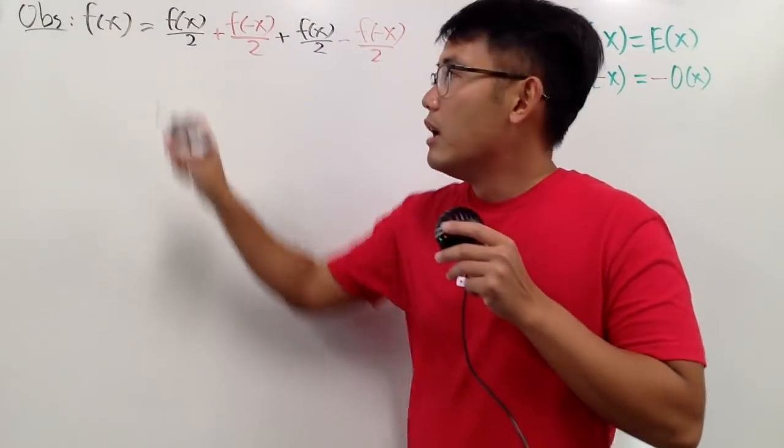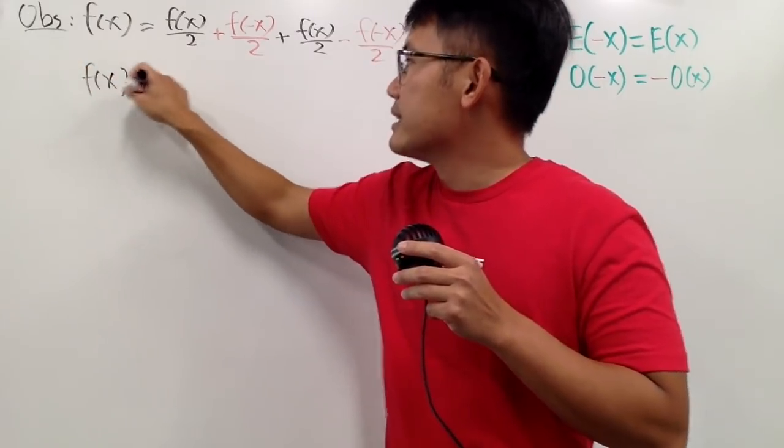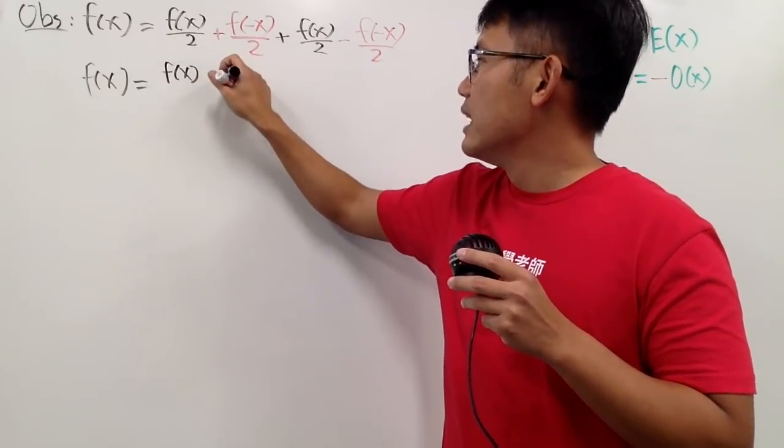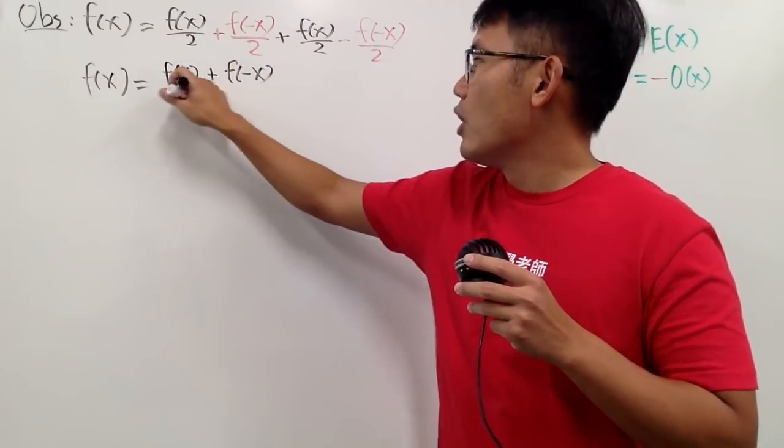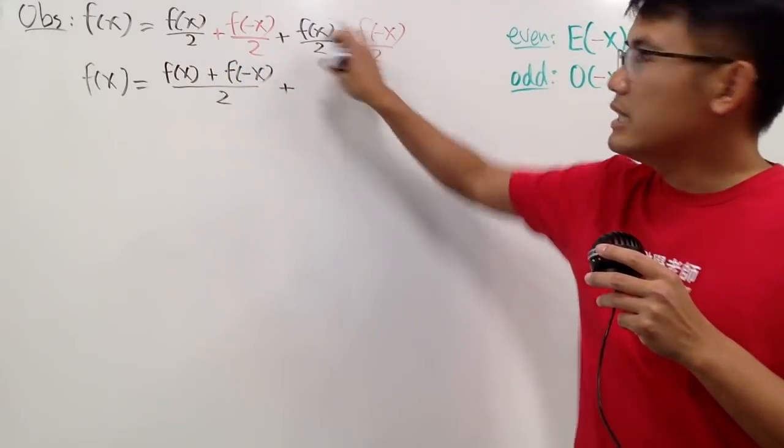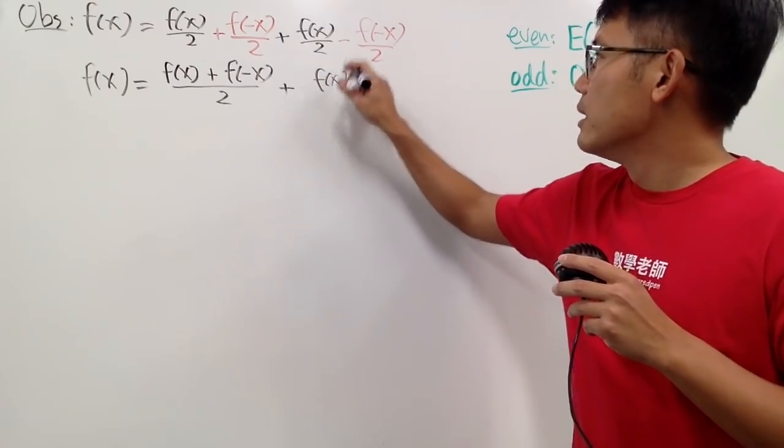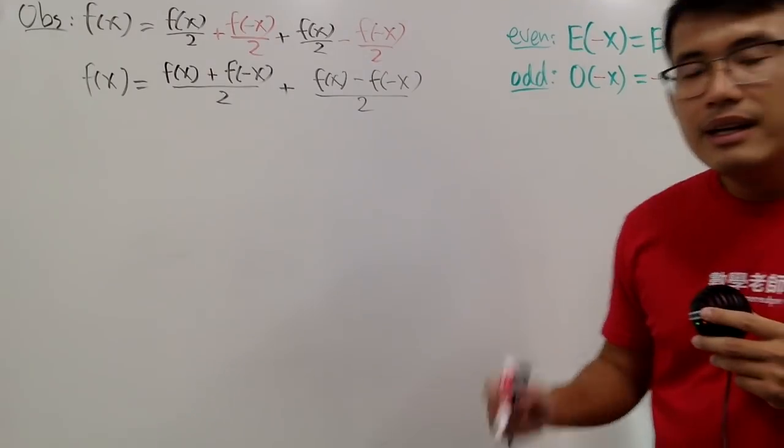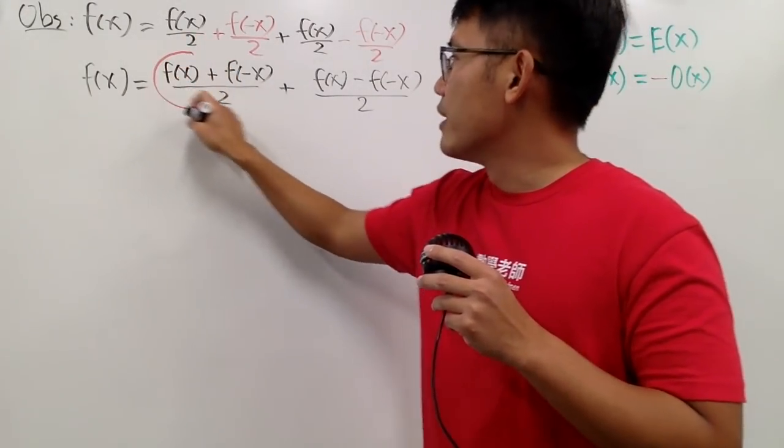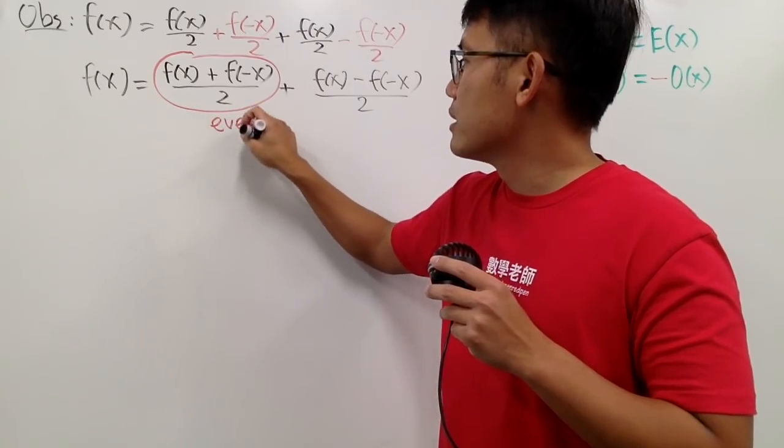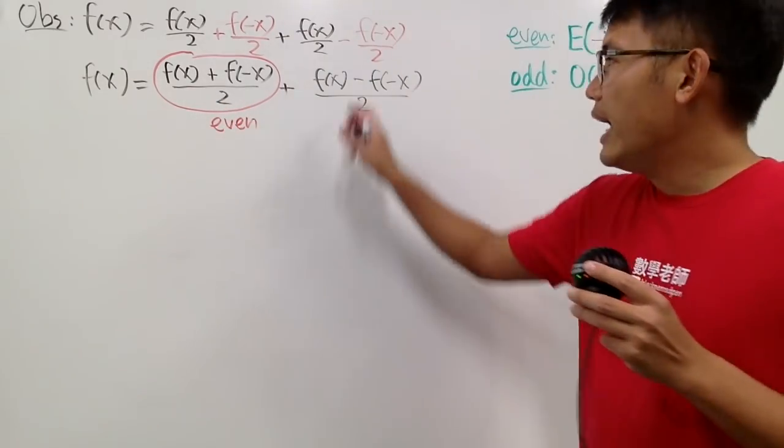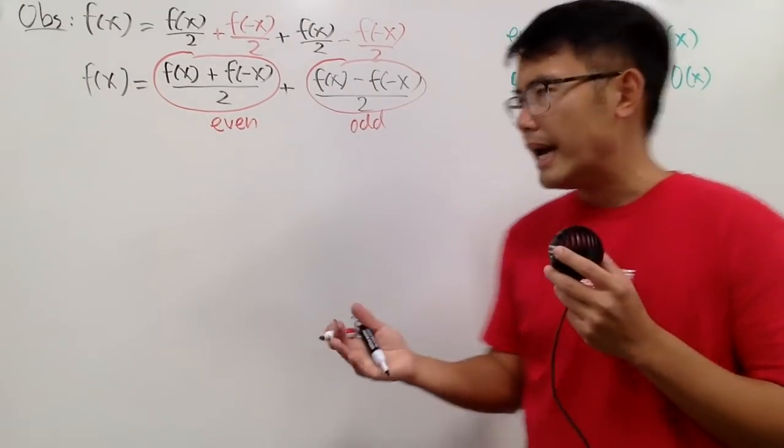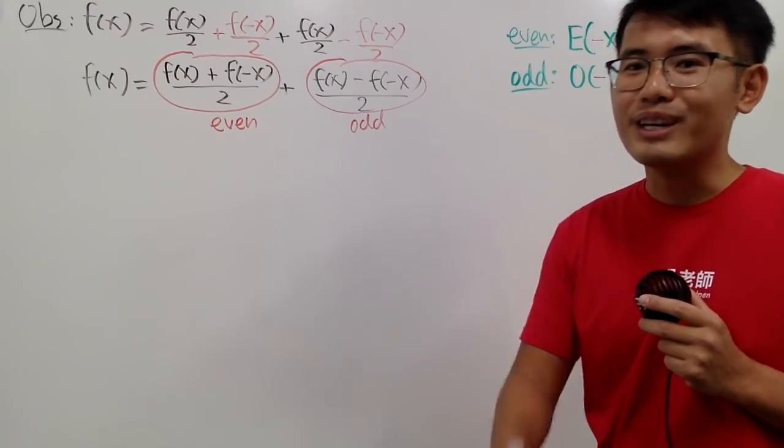Let me rewrite everything again. I will write f of x as f of x plus f of negative x all over 2. And then we combine this with f of x minus f of negative x all over 2. I claim that this is in fact the even part of f of x. And this part is the odd part of f of x. And the question is, how can I convince you?